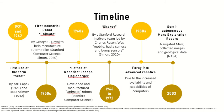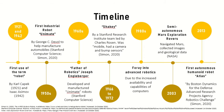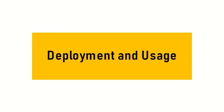In 2003, two semi-autonomous Mars exploration rovers were successfully used to navigate Mars and collect images and geological data. Another landmark milestone was in 2013 when Boston Dynamics created ATLAS, the first autonomous humanoid robot. Robots have clearly developed a lot over the years and are now deployed and used in many different contexts.